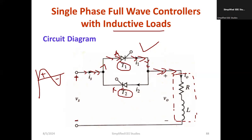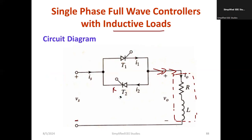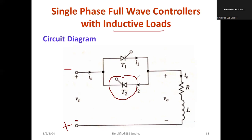During the negative half cycle, the polarity reverses — negative comes on the upper side and positive on the other side. In this case, T2 will be conductive at a delay angle we call beta, and the output current I0 goes to the load. T1 will not be conductive because it becomes reverse biased, while T2 becomes forward biased because the negative is on its anode side.